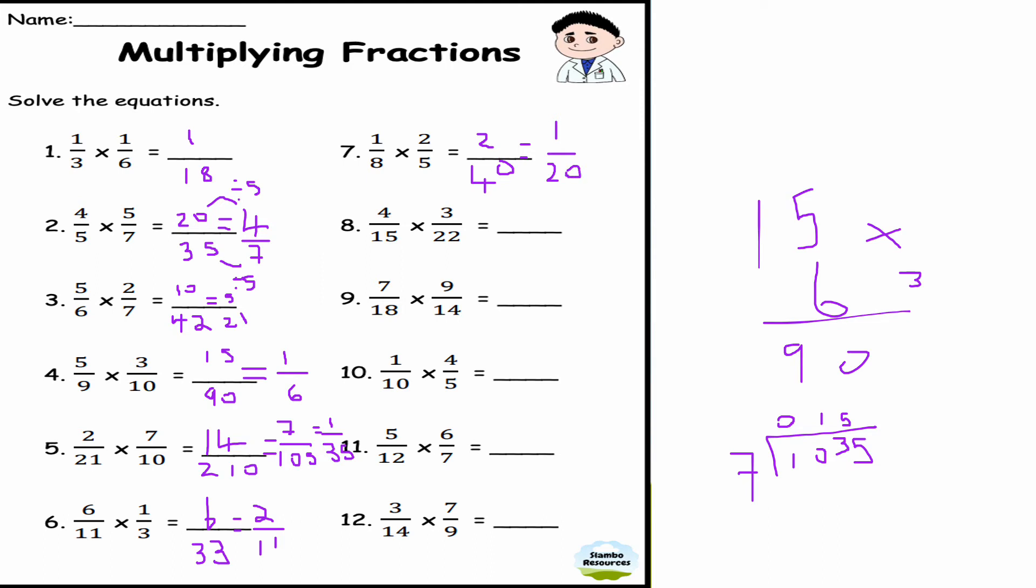This is question number eight: 4/15 times 3/22. This one's slightly trickier because it's bigger numbers, but if I start cancelling down, I can cancel this 3 and this 15 by dividing top and bottom by 3—I get 1 there and 5 there. If I now cancel this by 2, I get 2 there and 11 there. So what I'm doing is just cancelling down the fractions—I've divided top and bottom essentially by 6. So now I've got 2 times 1 which is 2, and 5 times 11 which is 55.